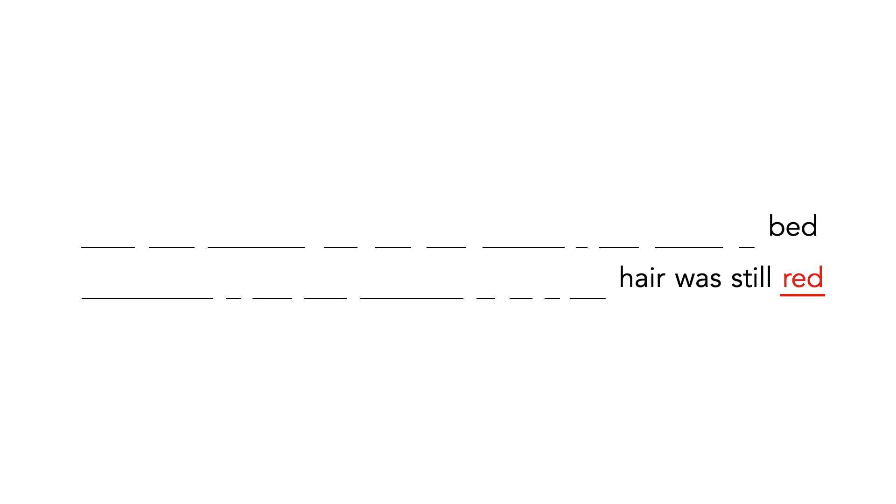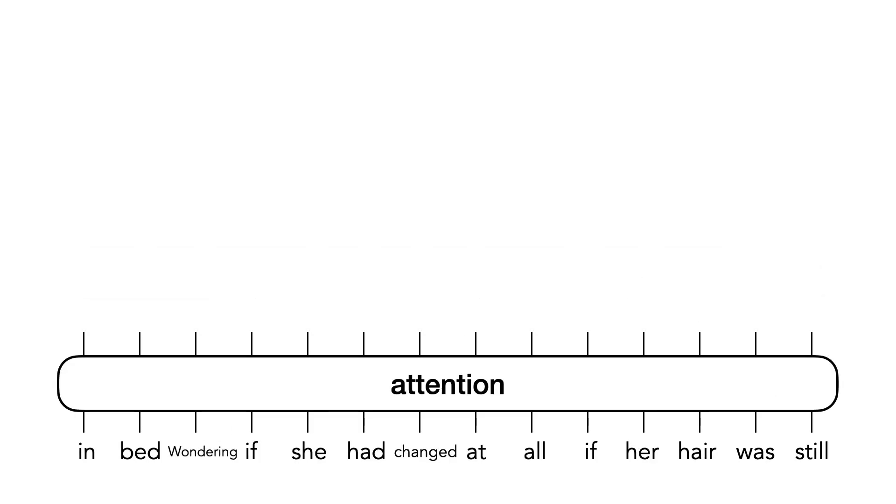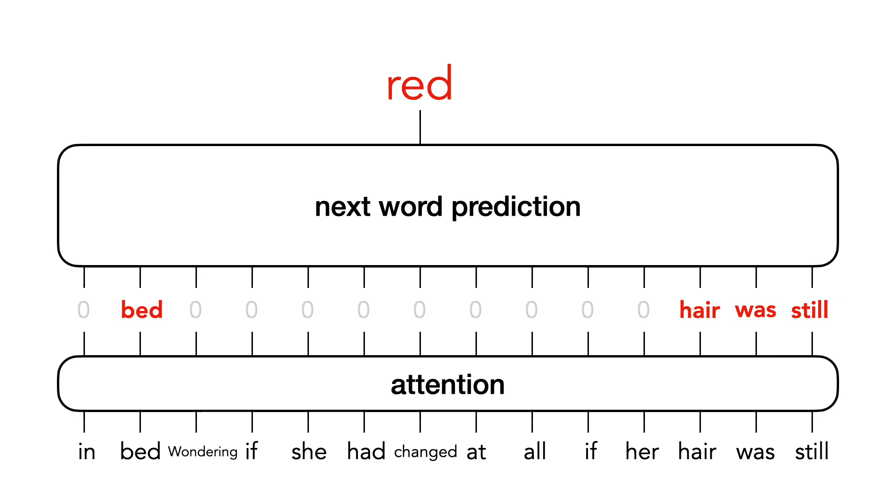What if we could train a neural network to solve this attention problem? We'll do this with an attention network that takes the input words and outputs attention weights between zero and one. We'll multiply these weights by the words themselves and feed the results into the next word predictor network.